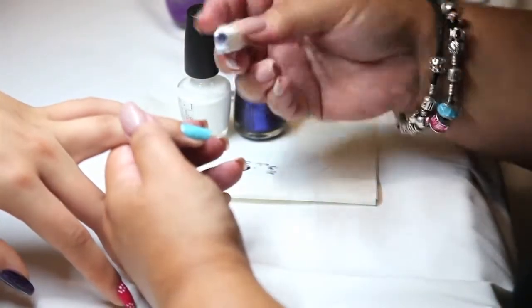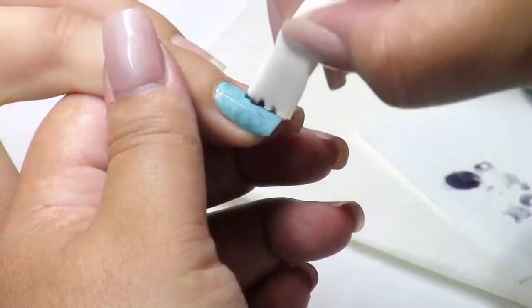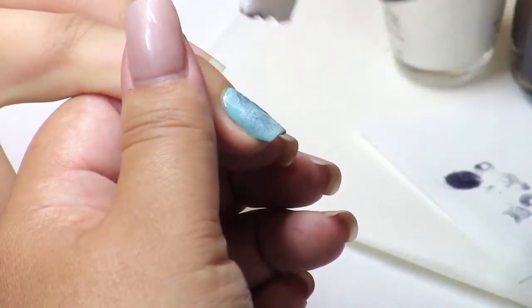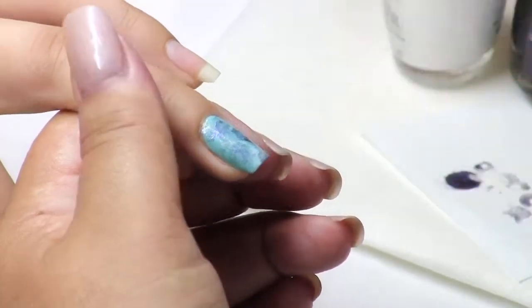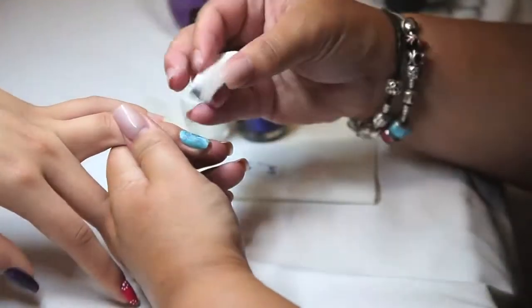So I'm dabbing off excess onto my palette paper, and here again, I'm not trying to hit the same spot. I just want it to be a little bit darker here and there. And that's it.